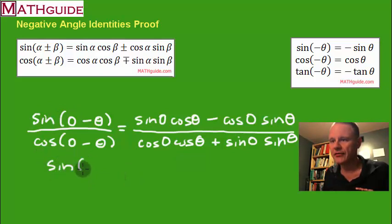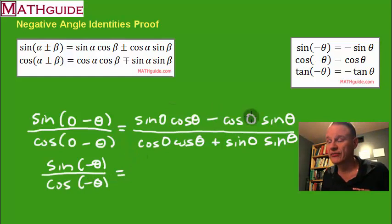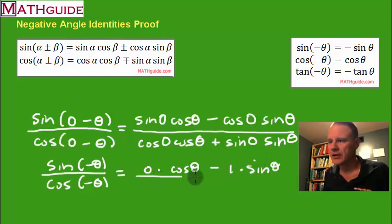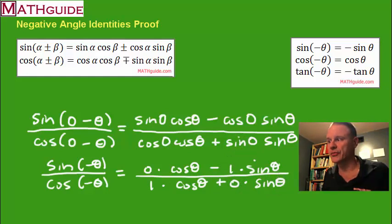So what is this numerator equal to? It's equal to the sine of negative theta. What's this denominator? It's the cosine of negative theta. What's this? Remember, sine of zero is zero. And let's see. Cosine of zero is one. And getting better with that straight line. Cosine of zero is one. And let's see. Sine is zero.